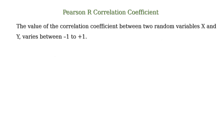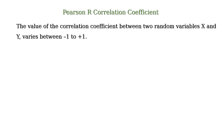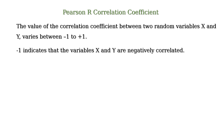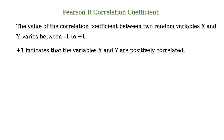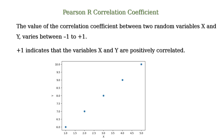The value of the correlation coefficient between two random variables x and y varies between minus 1 to plus 1. Minus 1 indicates the variables x and y are negatively correlated. For example, in this graph, x and y are negatively correlated with the correlation coefficient of minus 1. Plus 1 indicates the variables x and y are positively correlated. For example, in this graph, x and y are positively correlated with the correlation coefficient of plus 1.